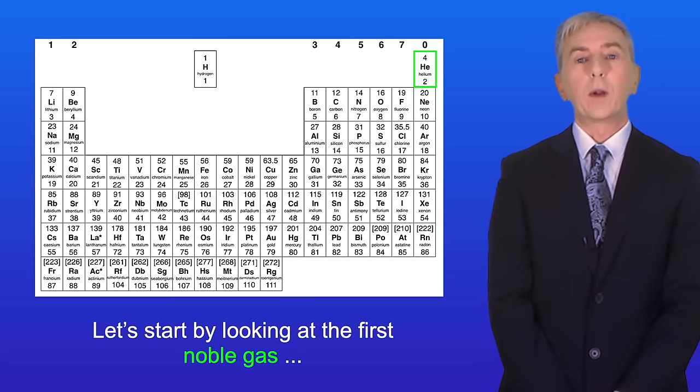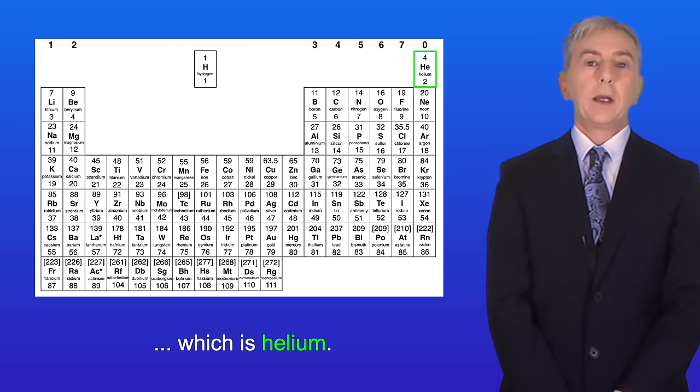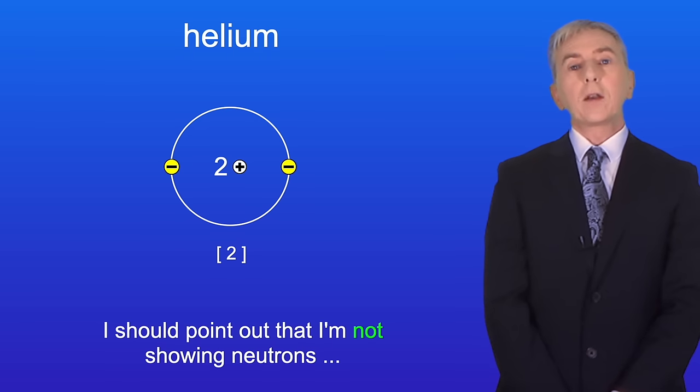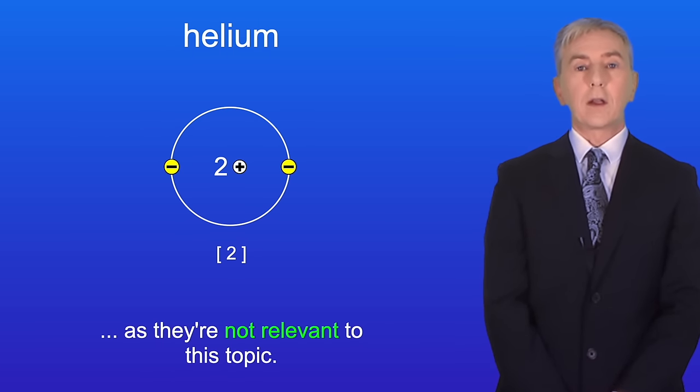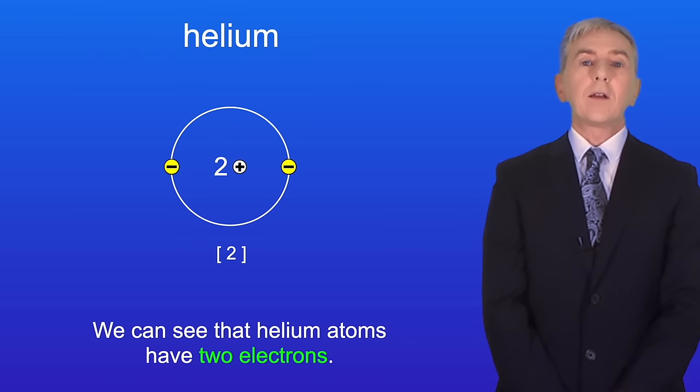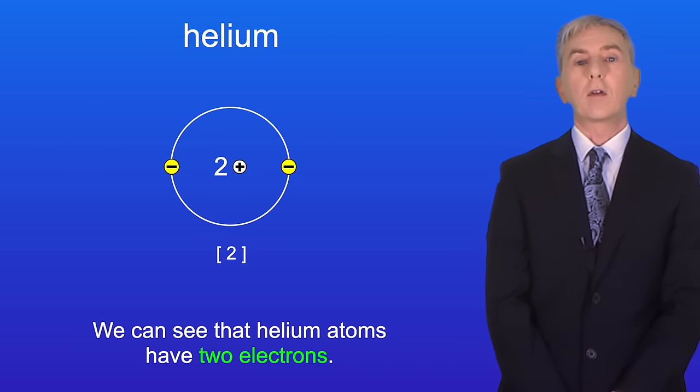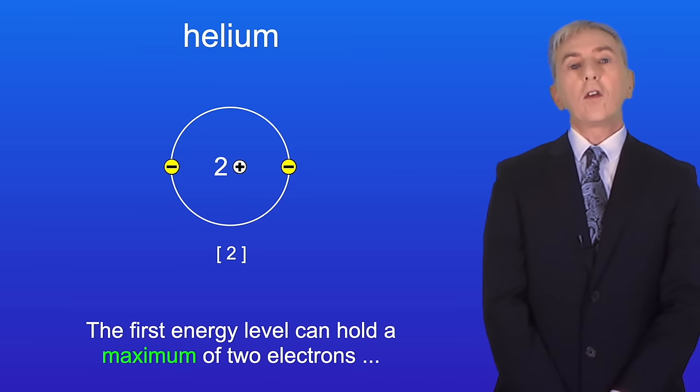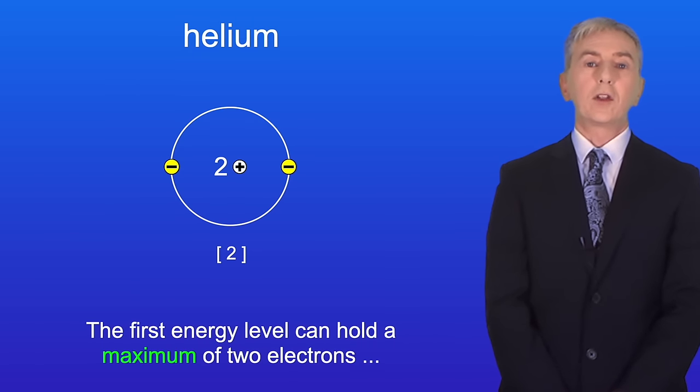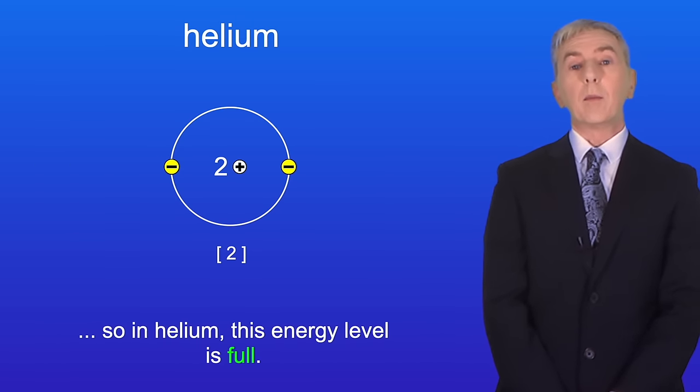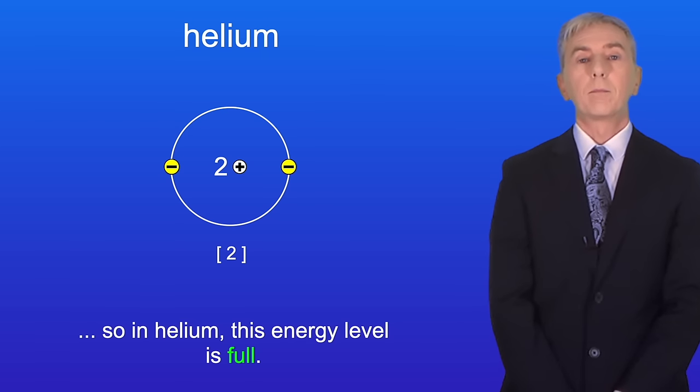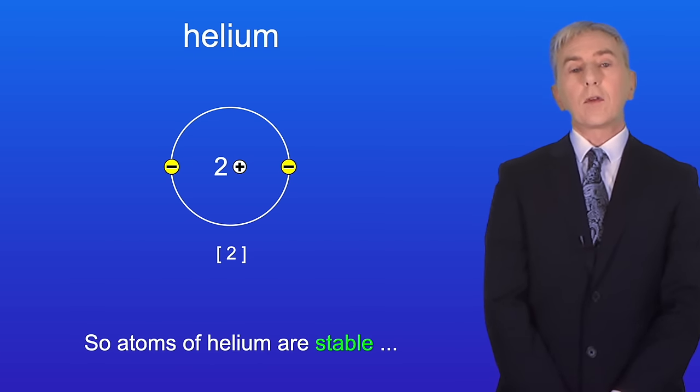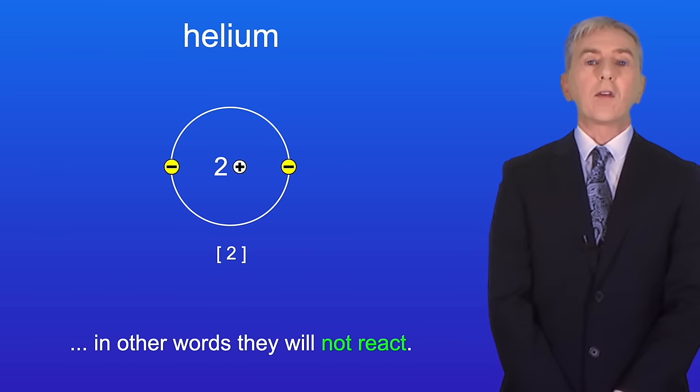Let's start by looking at the first noble gas which is helium. I'm showing you here the structure of an atom of helium. Now I should point out that I'm not showing neutrons as they're not relevant to this topic. We can see that helium atoms have two electrons and these electrons are both in the first energy level. Now the first energy level can hold a maximum of two electrons. So in helium this energy level is full. Atoms are stable when they have a full outer energy level. So atoms of helium are stable. In other words they will not react.